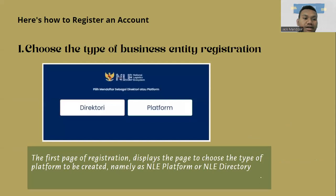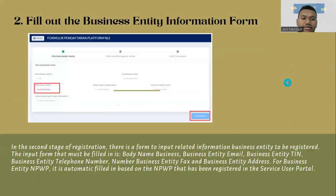Here's how to register an account. Step one: choose the type of business — business entity registration. The first page of registration displays the page to choose the type of platform to be created, namely as an NLE platform or NLE directory.